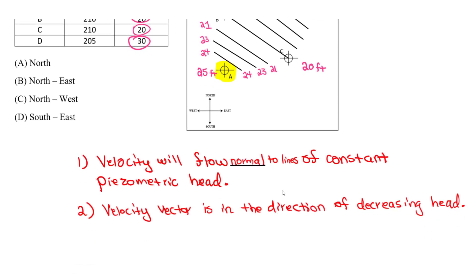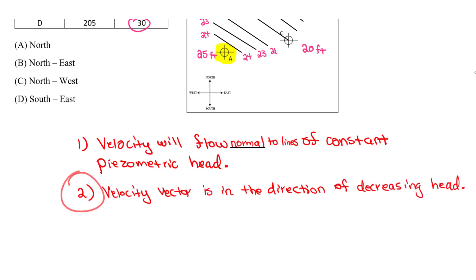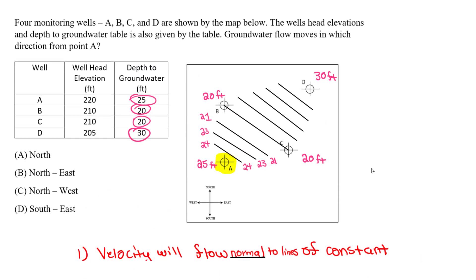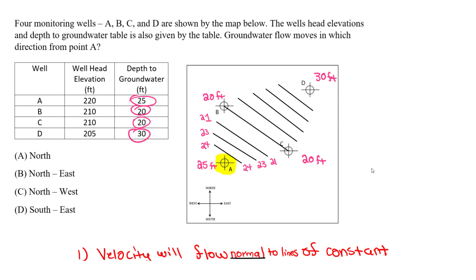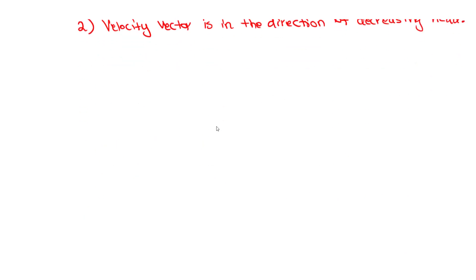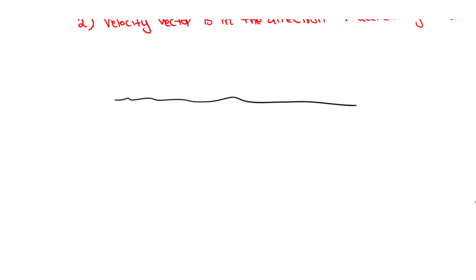We know the velocity vector is going to be normal to these equipotential lines. Now let's look at the second part: the velocity vector is in the direction of decreasing head. We have 25 ft at A and 30 ft at D. To clarify this, if I draw a side view, we have a well at A with a depth to groundwater of 25 ft.